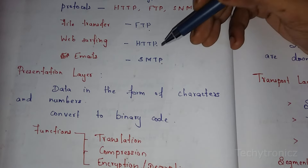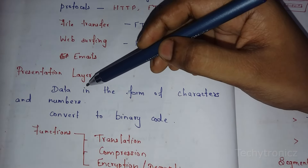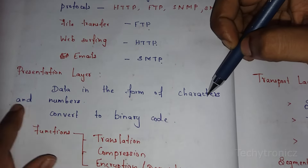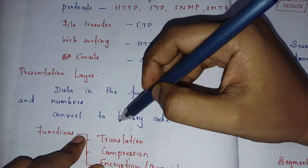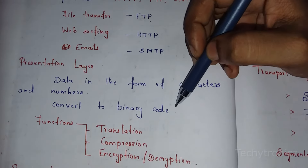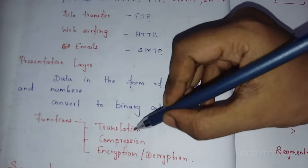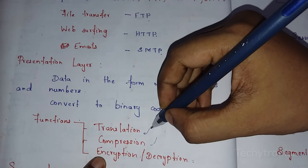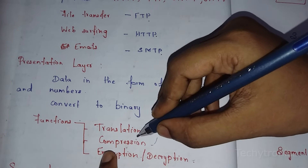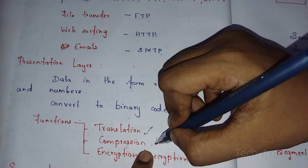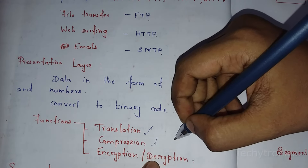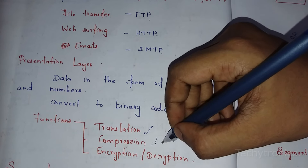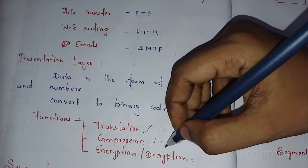The next one is the presentation layer. The data, when we need to transmit it, will be in the form of characters and numbers. The presentation layer first translates it — it converts the data to binary code. So the functions of the presentation layer are translation, compression, and encryption or decryption. The binary-coded file is then compressed; for example, a 5MB file may be reduced and compressed before being transmitted to the receiver.